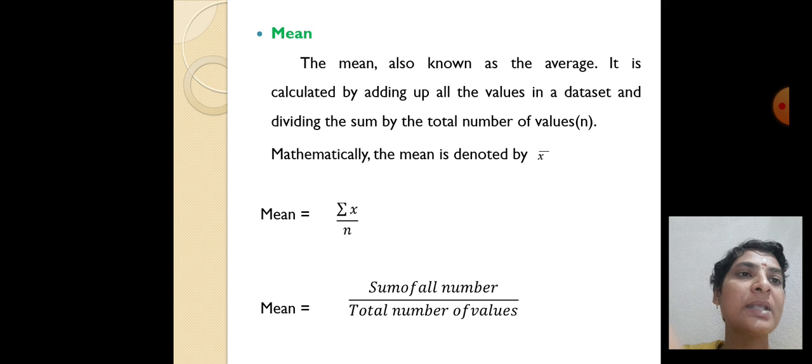The mean, also known as the average, is calculated by adding up all the values in a data set and dividing the sum by total number of values. Mathematically, the mean is denoted by x̄. The formula for mean is sum of x divided by n.